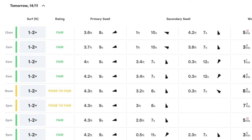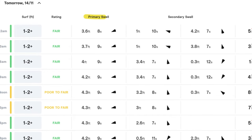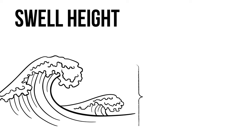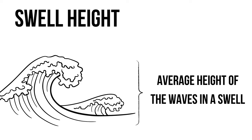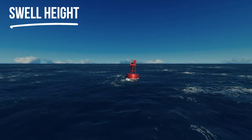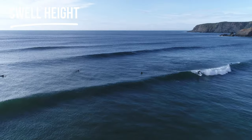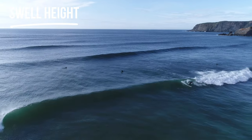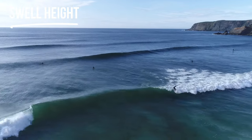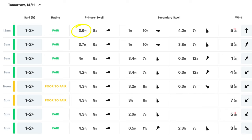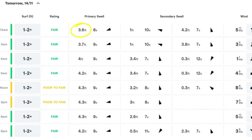The next column over is probably the most important: the primary swell. The primary swell is the main swell affecting a particular spot. Within it, the first important aspect is the swell height — that's worked out from the average size of the waves within that storm. As all these swells move through the ocean, buoys out to sea measure that data and work out an average wave size.